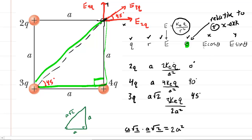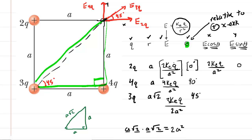For the x component, we take the electric field and multiply by the cosine of the angle. For E2Q, cosine of 0° is 1, so the x component is simply 2kEQ / A². For the y component, we multiply by sine of the angle. Sine of 0° is 0, so the y component is 0 — which makes sense since E2Q points only to the right.